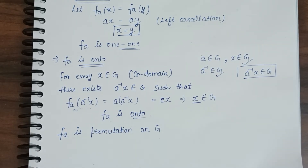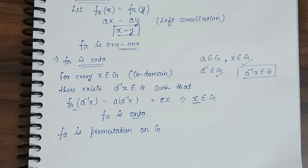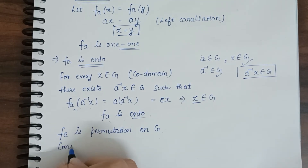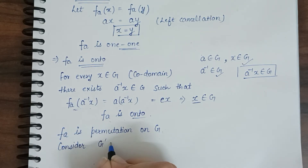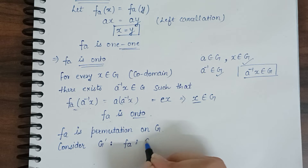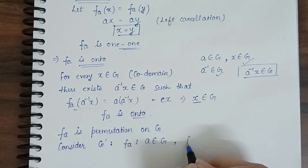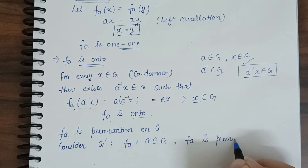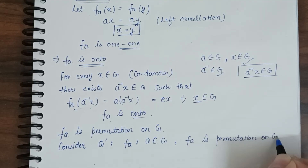So we can write the function F_A is a permutation on group G. Now, we have simply proved permutation. But what did we say in the statement? Permutation group. So we need to prove this is a permutation group. Consider group G' such that it is of the form F_A, where A belongs to group G and F_A is a permutation on group G.